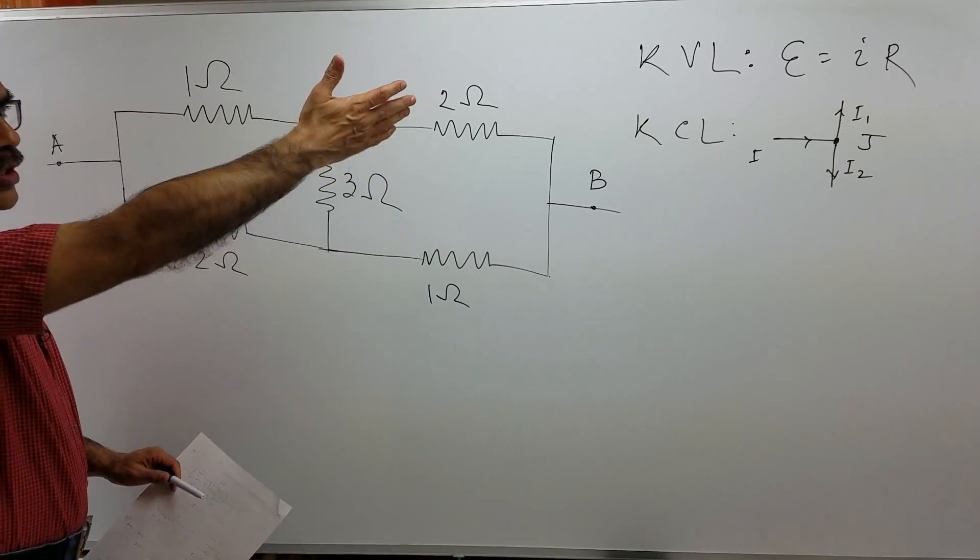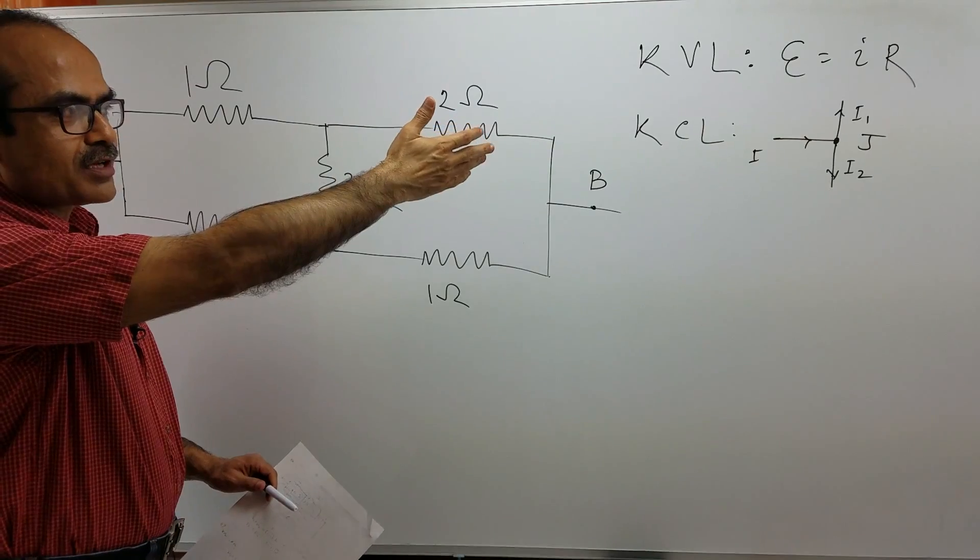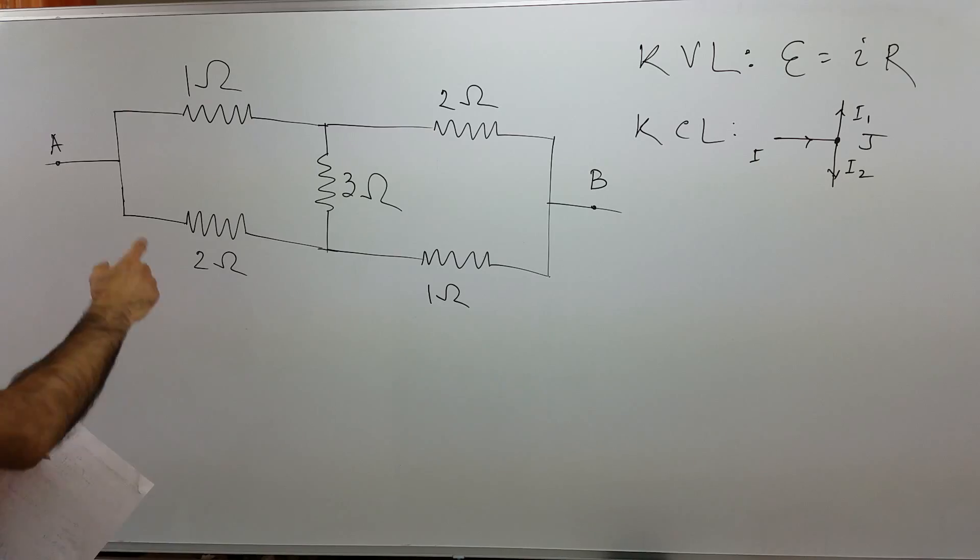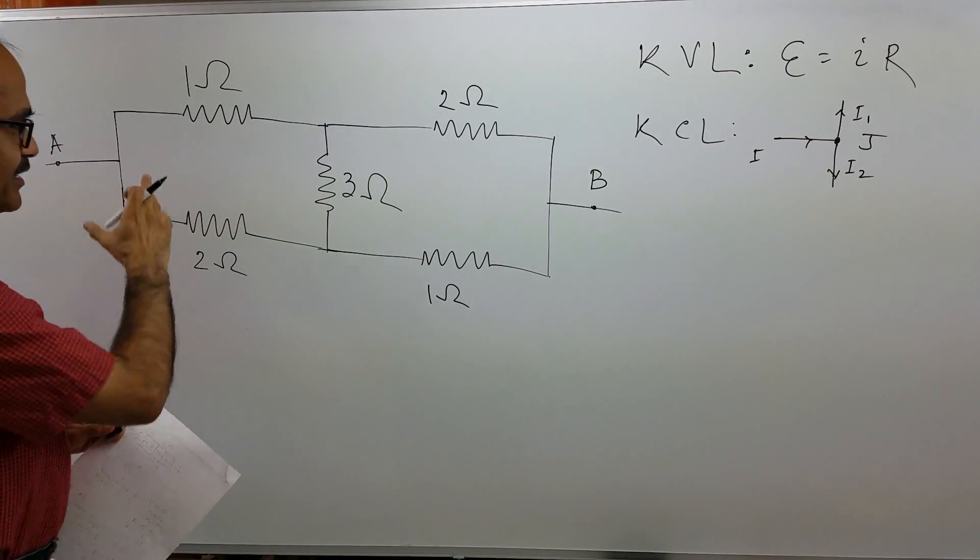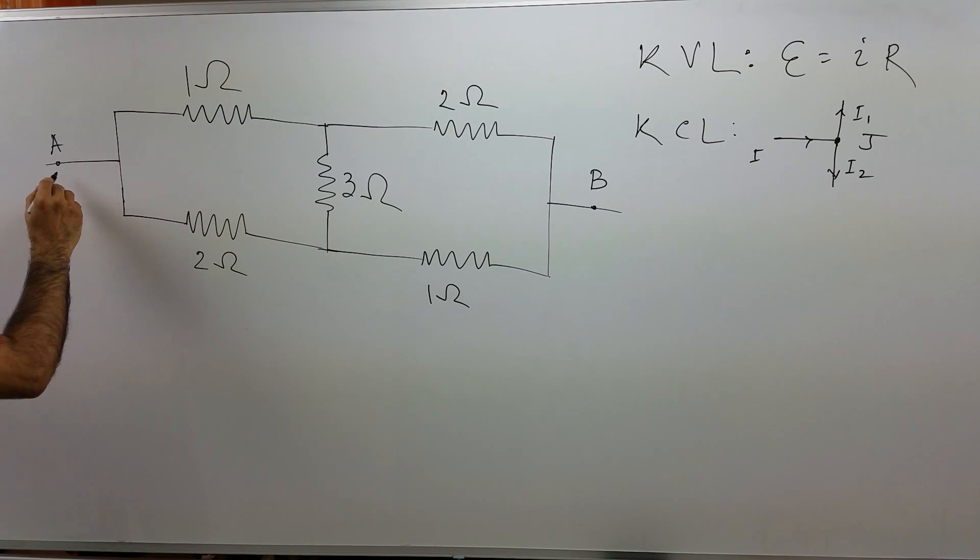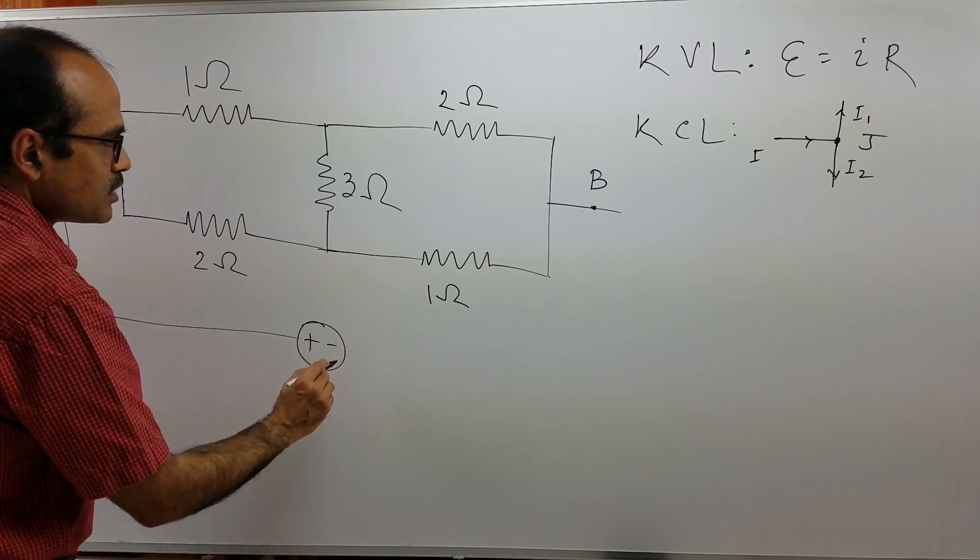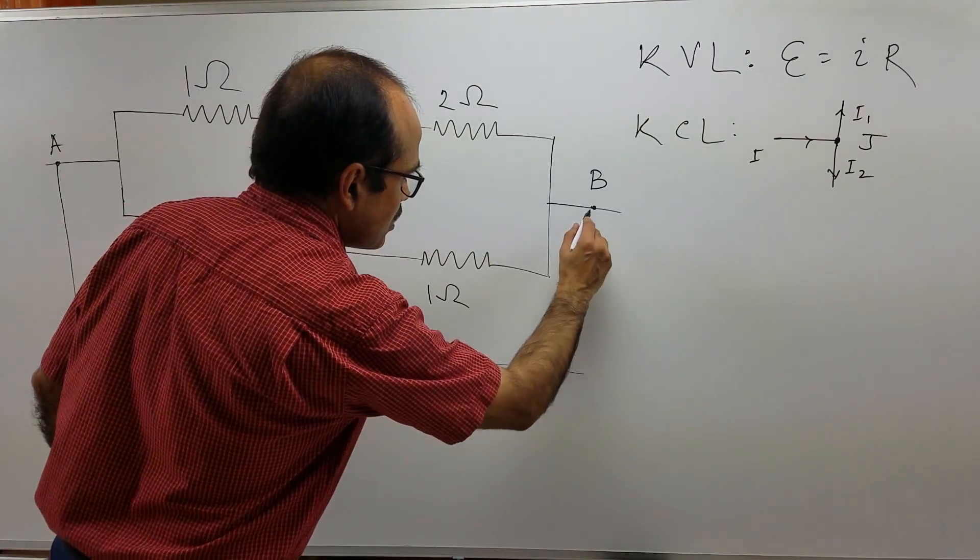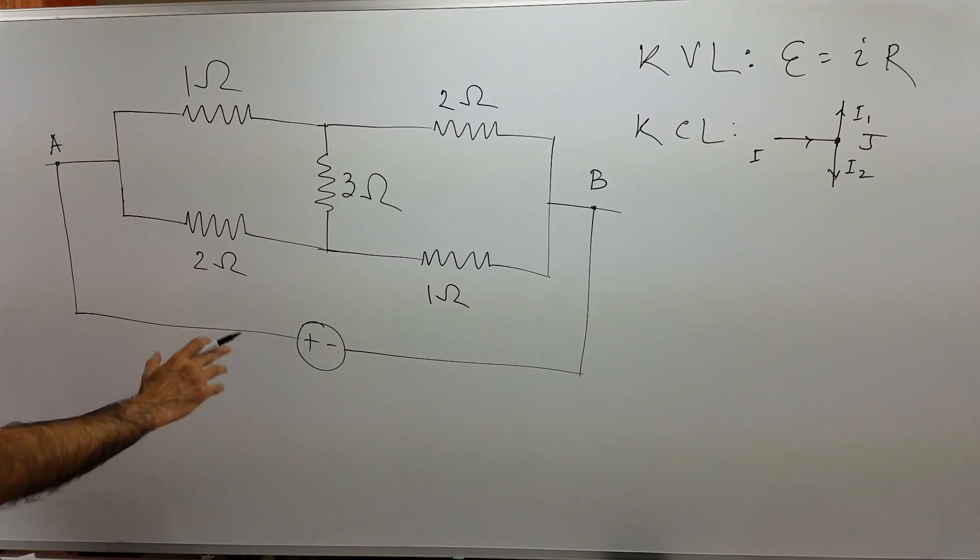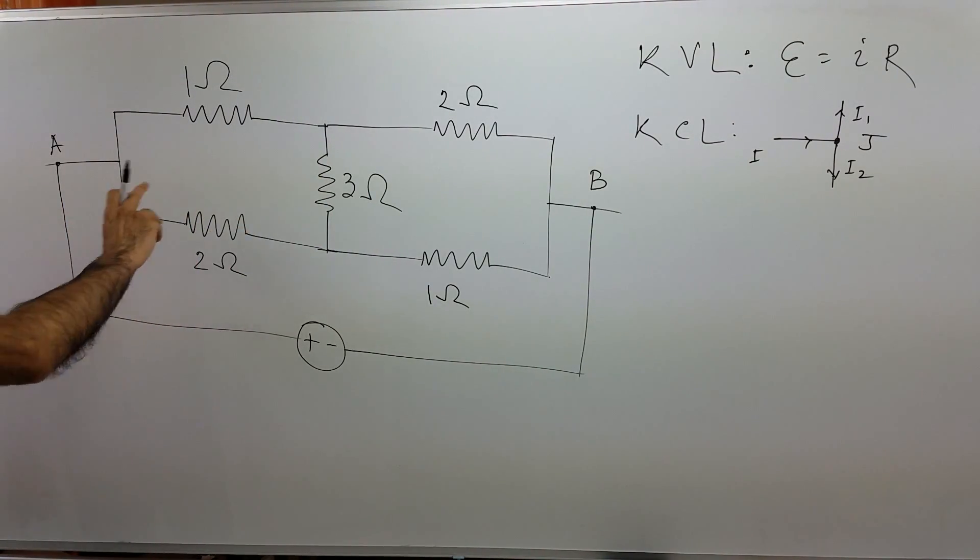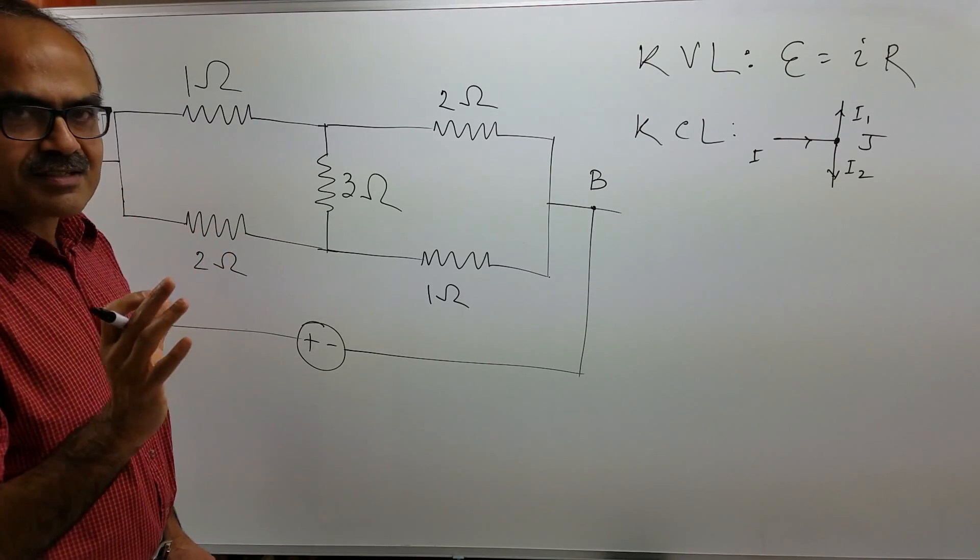We have to use Kirchhoff's voltage law and Kirchhoff's current law. I am coming to that a little later. First of all, we want the equivalent resistance between A and B. In such a case, we always connect a cell across the points between which a resistance is asked for.